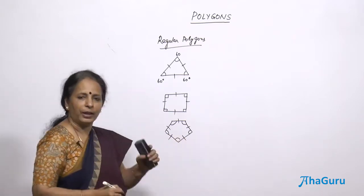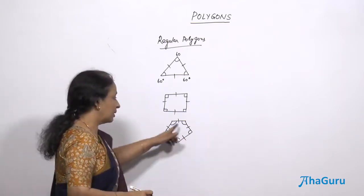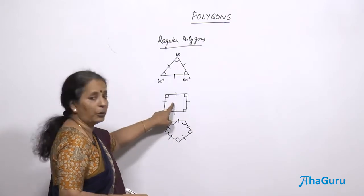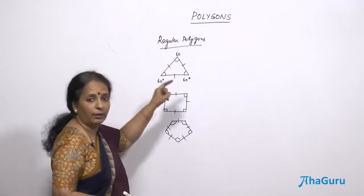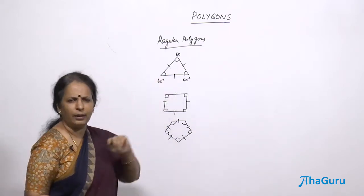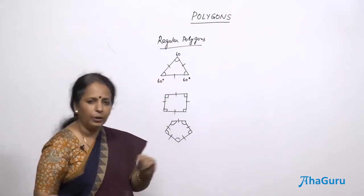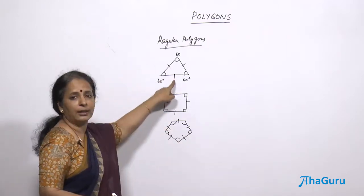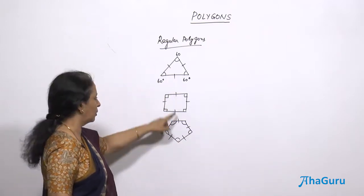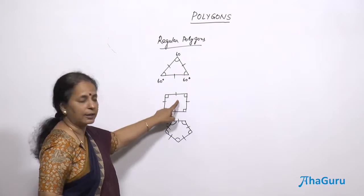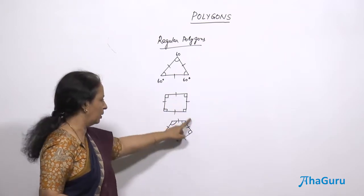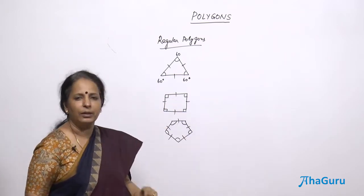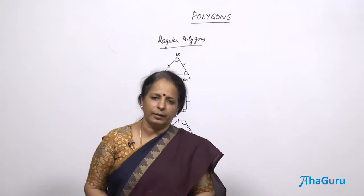Obviously you can have different types — the angles need not be always equal. In a triangle also, the angles need not be always equal. This is a rare case when all the angles are equal and all the sides are equal. All the angles are equal and all the sides are equal — that is a regular pentagon.